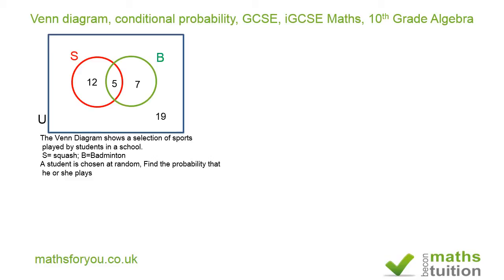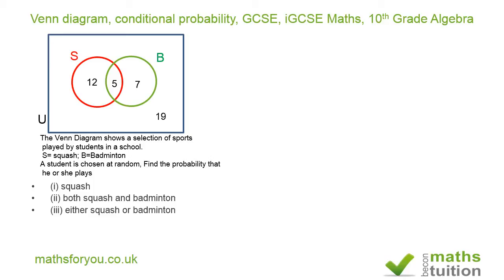If a student is chosen at random, find: (1) the probability that he or she plays squash; (2) the probability of playing both squash and badminton; (3) the probability of playing either squash or badminton; and (4) the probability of playing only one sport.